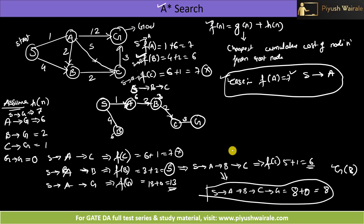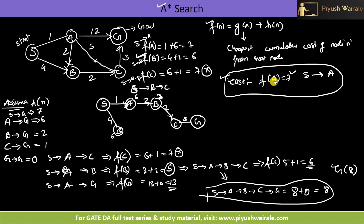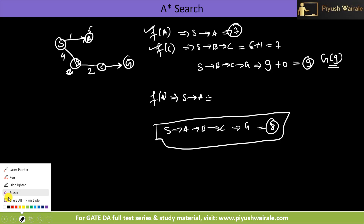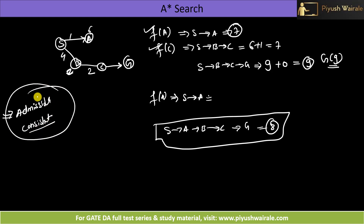In this way we get the optimal path in A* search. Please try to solve this example on your own and then watch the video again. In Case 1 the algorithm stopped because no unexplored path had a lower cost, while in Case 2 it continued exploring. I hope you understand the difference. We also have two properties of A* — admissible and consistent — which we will discuss in the next video. Thank you.